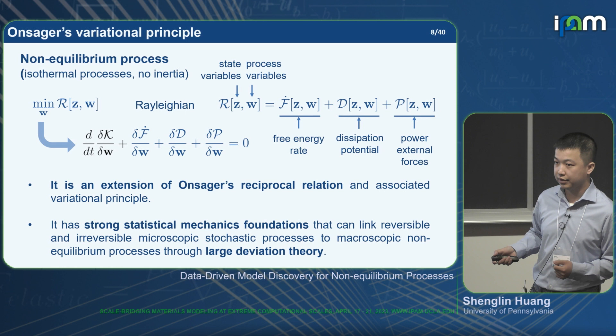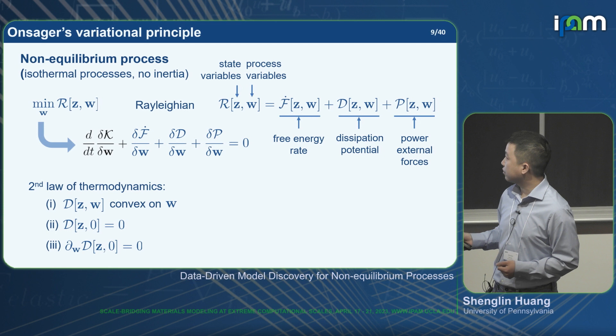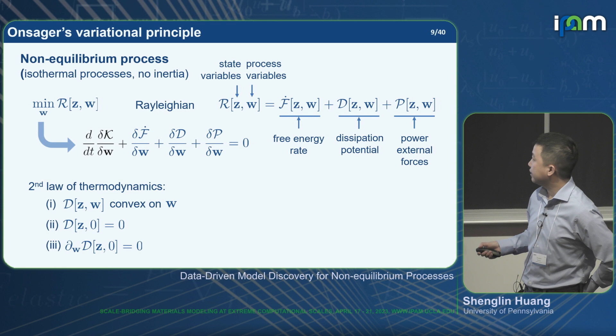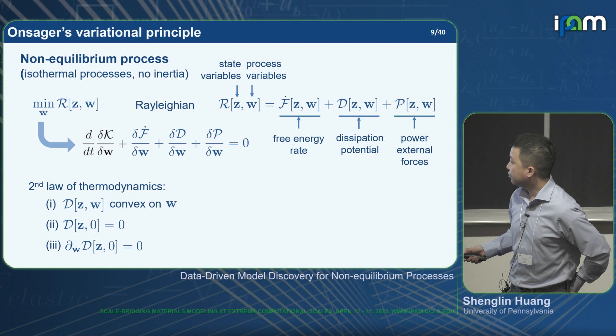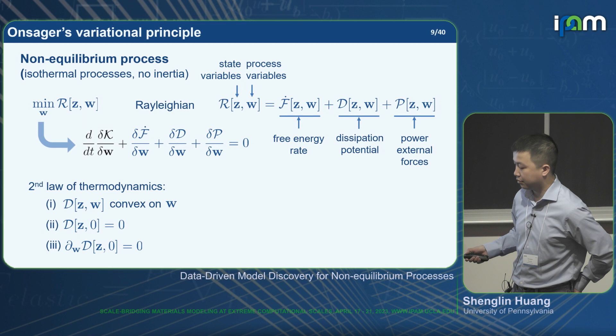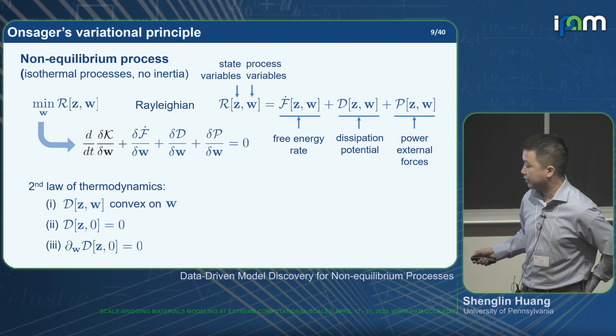To apply the Onsager variational principle we also need constraints from the second law, specifically three constraints on the dissipation potential: it should be a convex function of the process variable w; it should be calibrated to zero at the zero point; and most importantly, the dissipative force — the derivative of D with respect to w — should be zero when w is zero, meaning if there is no process there should be no dissipation.